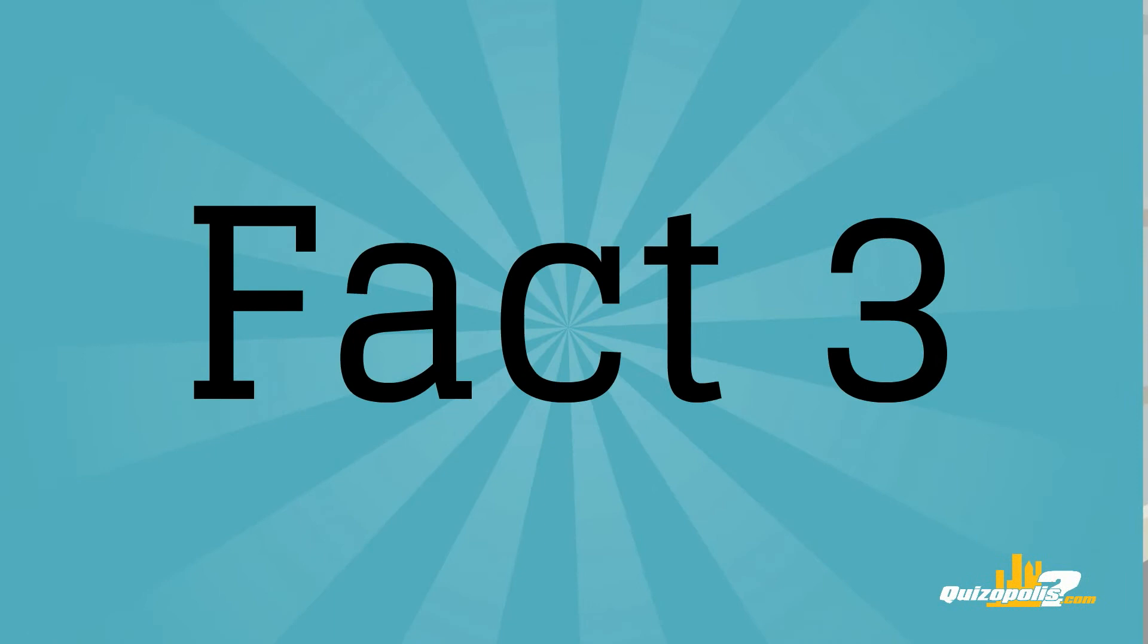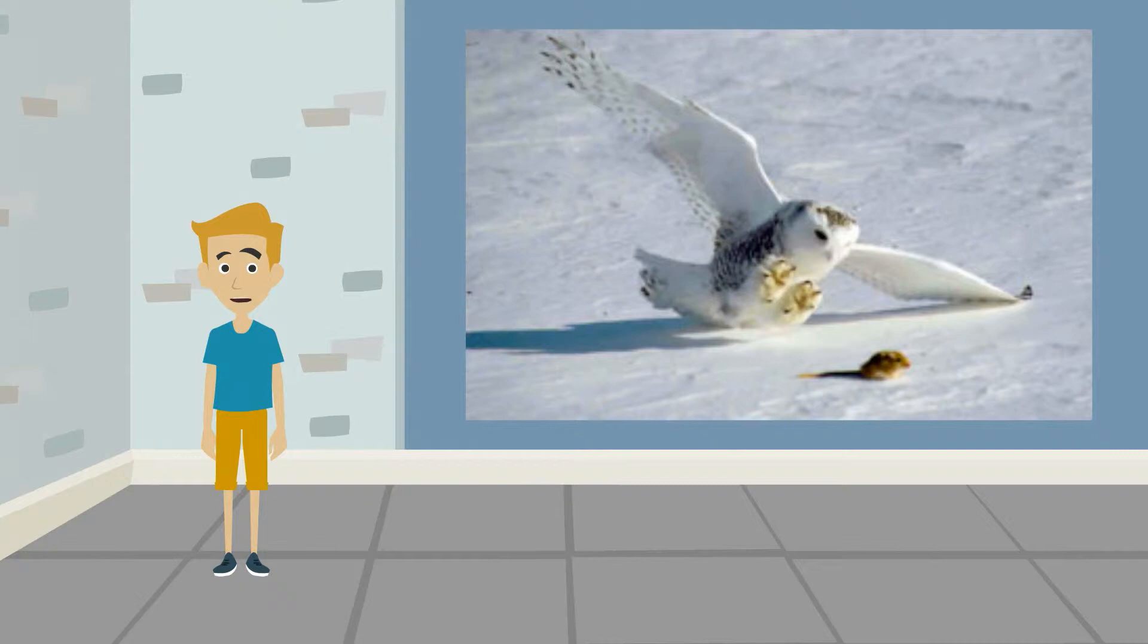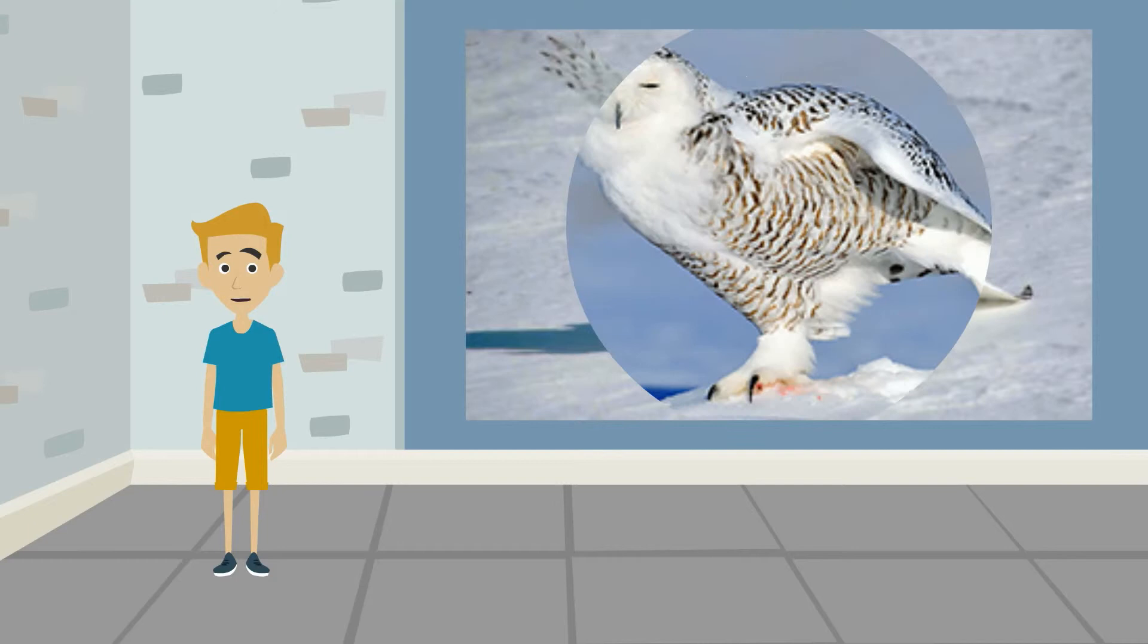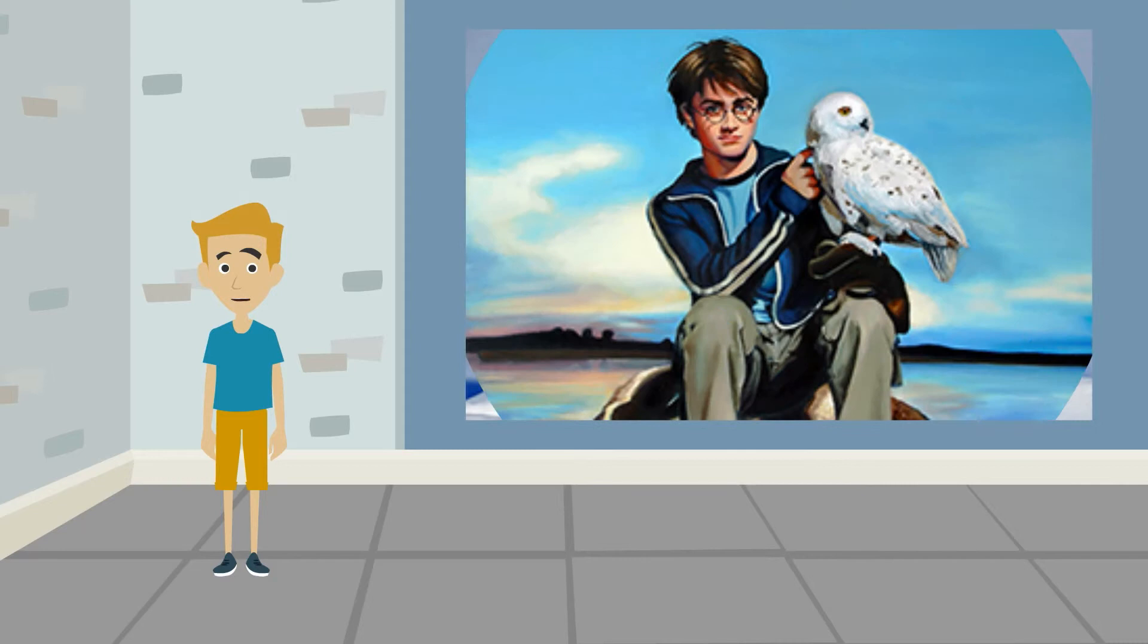Fact number 3. Hedwig is a snowy owl, and only a few live in the British Isles. The owls are hunters and hunt and eat small animals for food. They are very strong, and their talons can kill a large duck if they need to. No wonder Hedwig protected Harry so well.